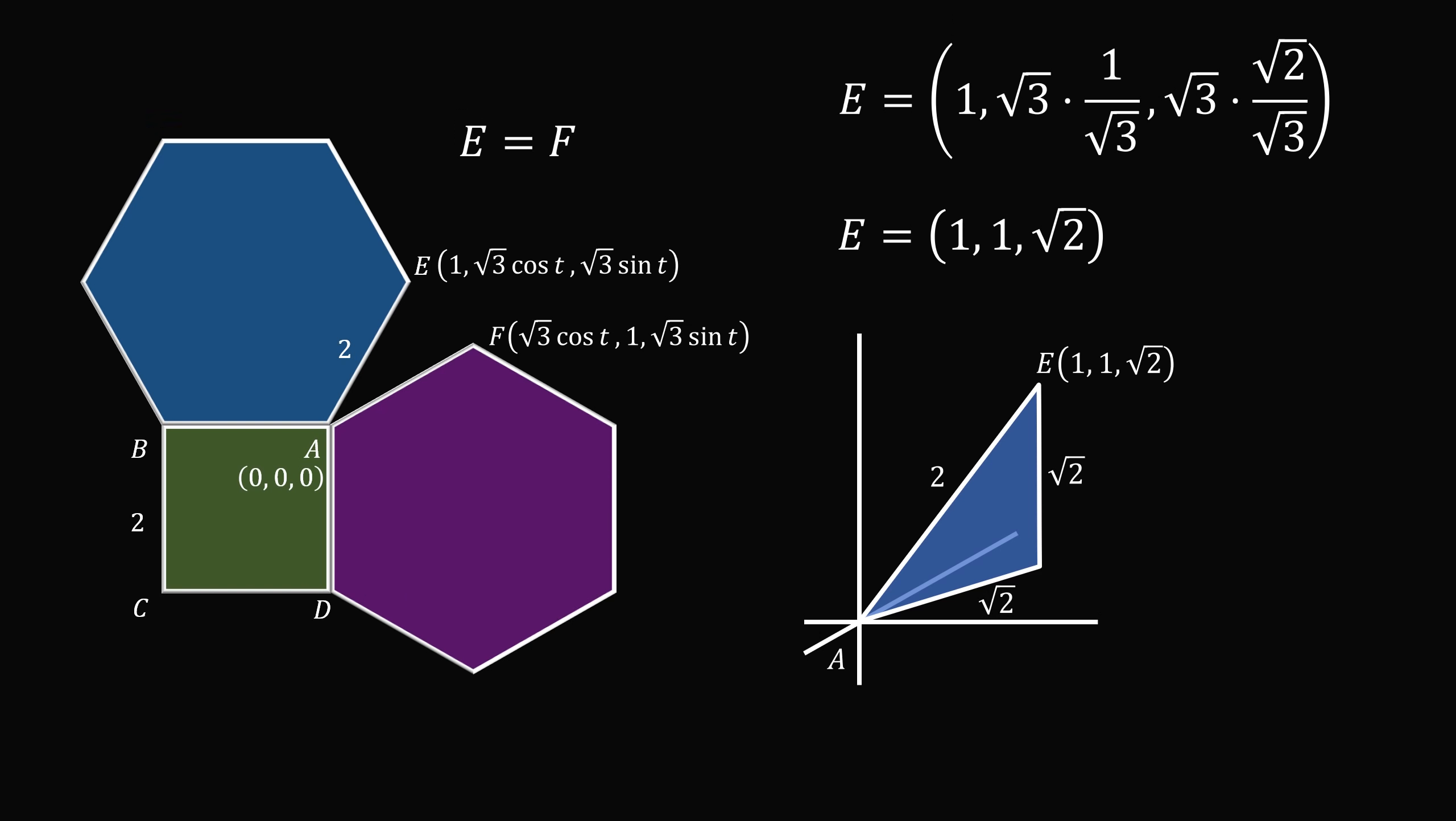We thus have an isosceles right triangle because two of the legs are equal to the square root of 2. This means each of the acute angles is equal to 45 degrees. Thus AE makes an angle of 45 degrees with the flat surface. And that's the answer to part 2.